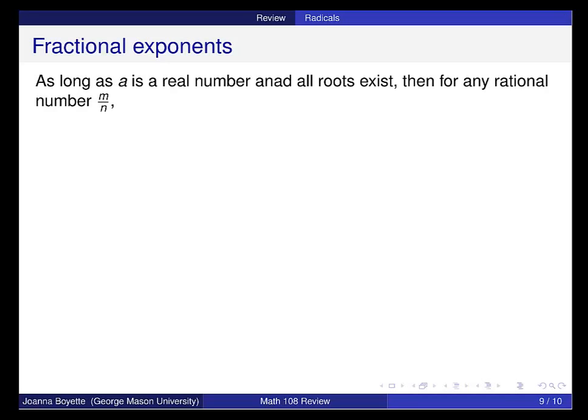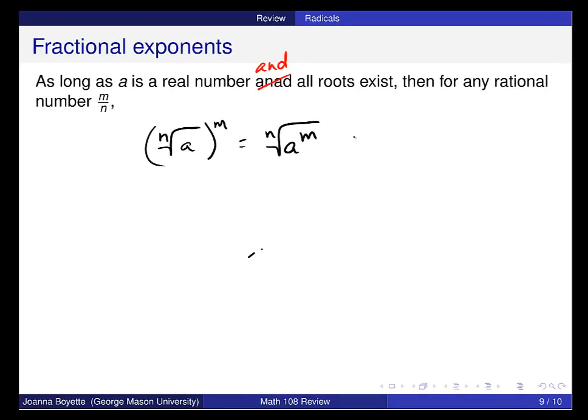Fractional exponents. I think there's a typo right here. And as long as a is a real number and all roots exist, then for any rational number, we have this connection between the nth root of a to the mth power is a to the m over n. So, examples. 3 to the 1 half power is the same thing as the square root of 3. That index comes out front, and the 1 goes in here, which we would typically write like this.